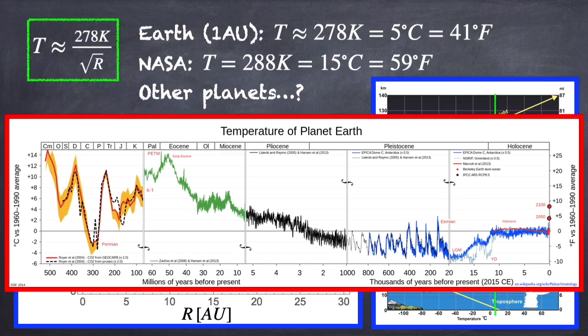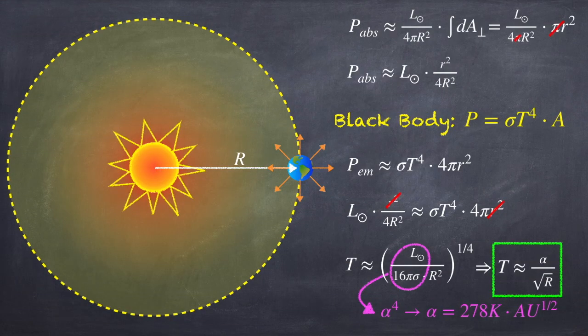Now I want to point out, if we go back to our expression for alpha, notice that it depends on the luminosity of the Sun. So if that changes, if the Sun were to get hotter or cooler, that would also affect the temperature of the Earth, but not because the distance from the Earth to the Sun has changed, but because the Sun's output has changed.